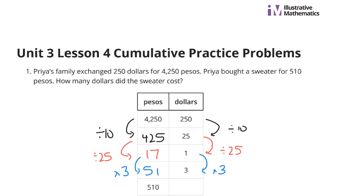And our last step, then, how do we get from 51 to 510? Well, we multiply by 10. And 3 times 10 is 30. Let's continue on.